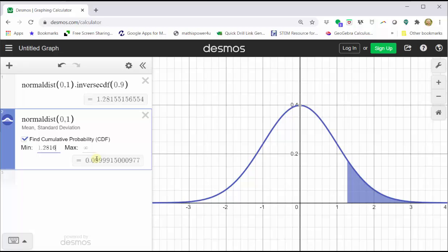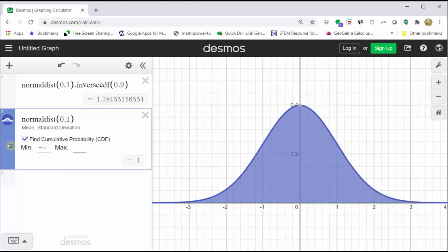Or we could check the area to the left by clearing the minimum, pressing tab, and have the maximum be approximately 1.2816. Notice how we get approximately 0.9. Let's go ahead and record this Z-score.